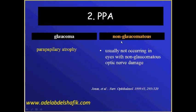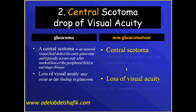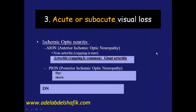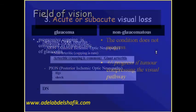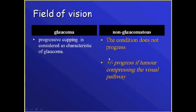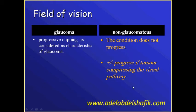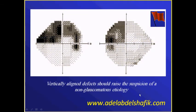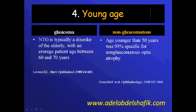Parapapillary atrophy in non-glaucomatous cases usually does not occur. Affection of the central vision or central scotoma will draw our attention that we most probably are not dealing with glaucomatous cupping. Acute onset of the condition again does not go with glaucoma. Non-glaucomatous conditions usually show a stable field, but sometimes some causes of non-glaucomatous cupping will show some progression with time — like tumors compressing on the visual pathway. Respect of the vertical line indicates a non-glaucomatous situation.